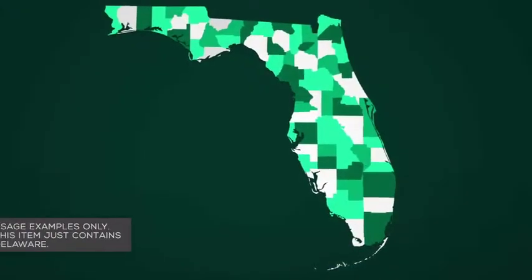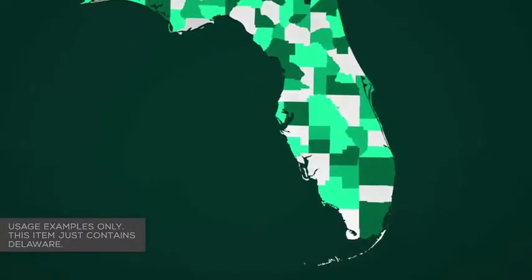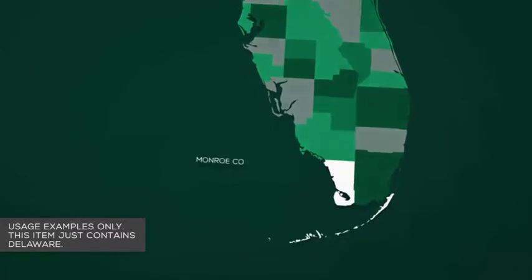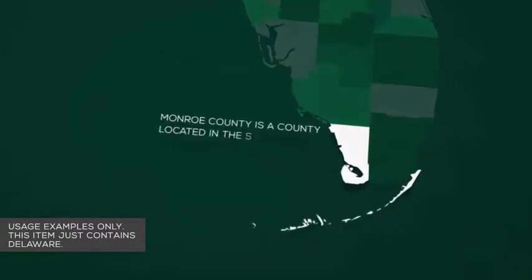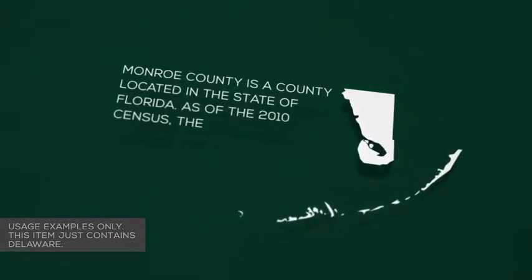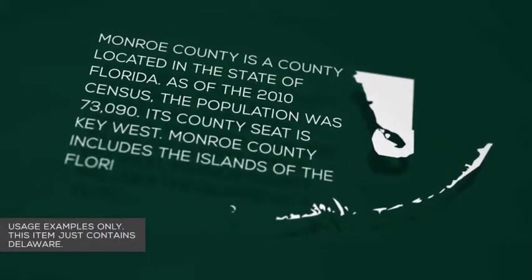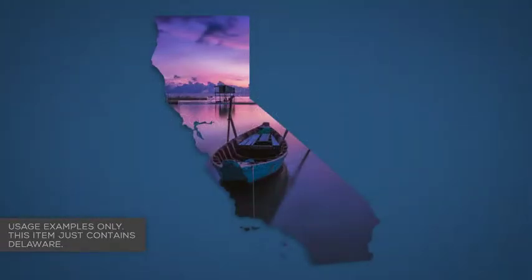Zoom in to areas of interest and hide the layers you don't need to focus on certain counties. Animate individual counties and add your own text and camera moves as required.